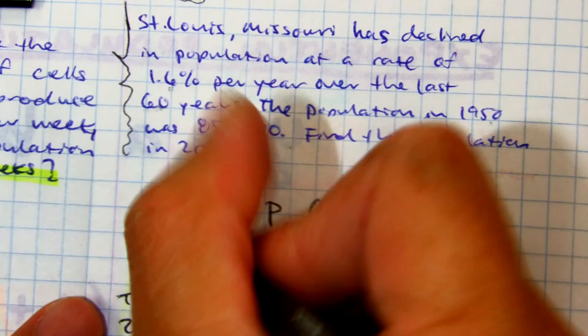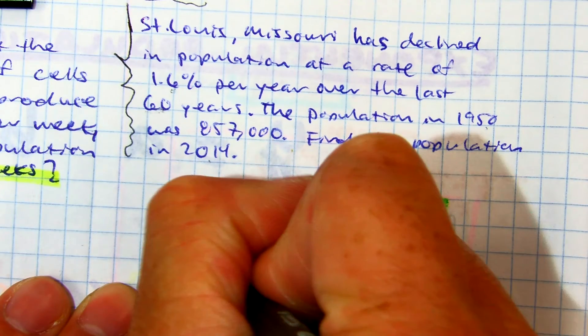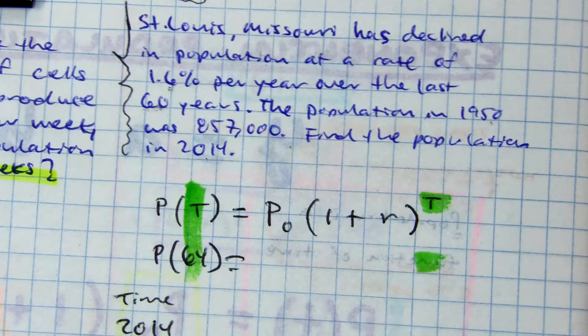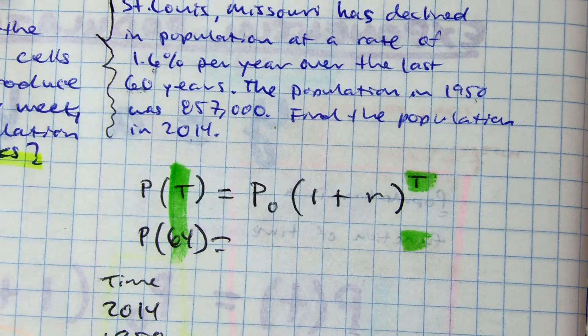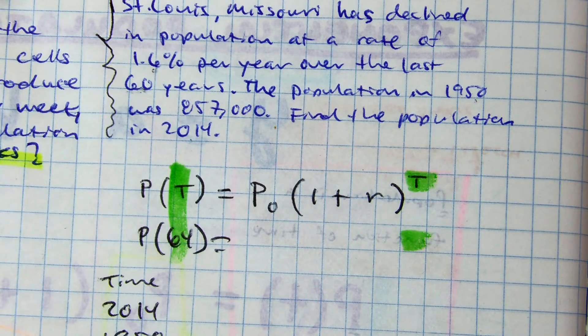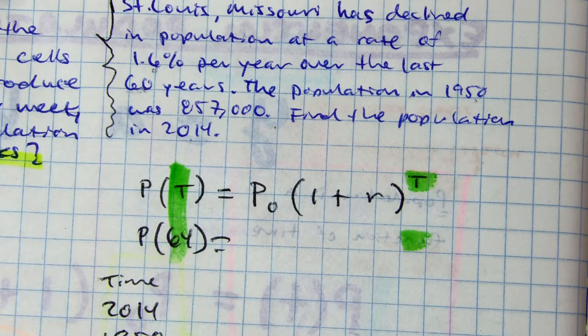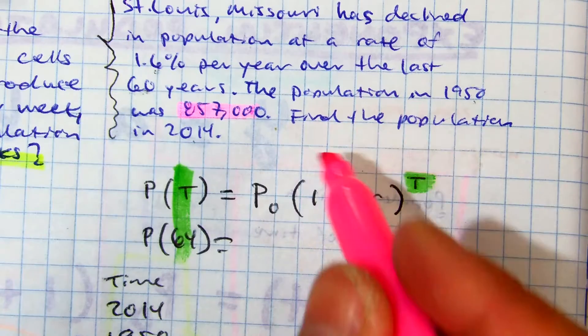My population after 64 years from 1950. Brian, P sub 0? Yeah, that's our starting population.